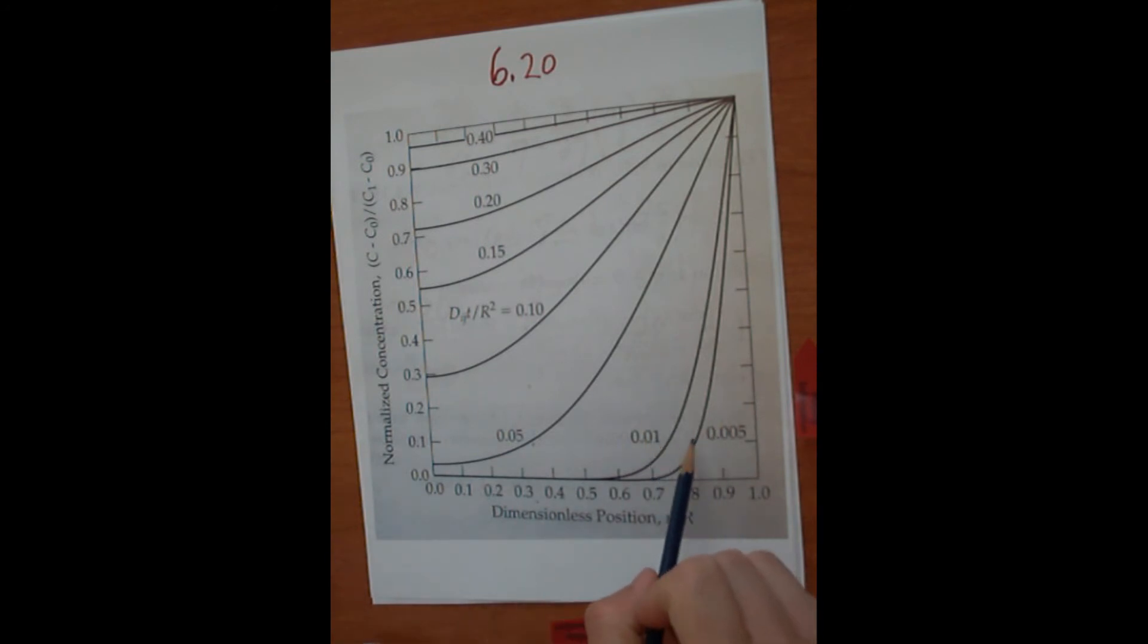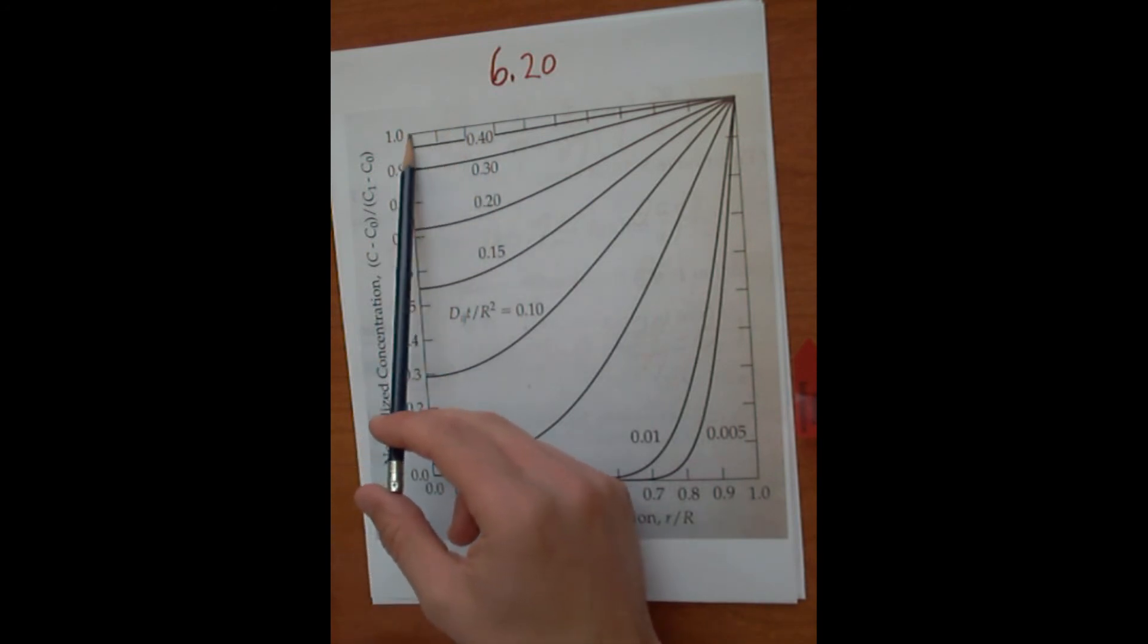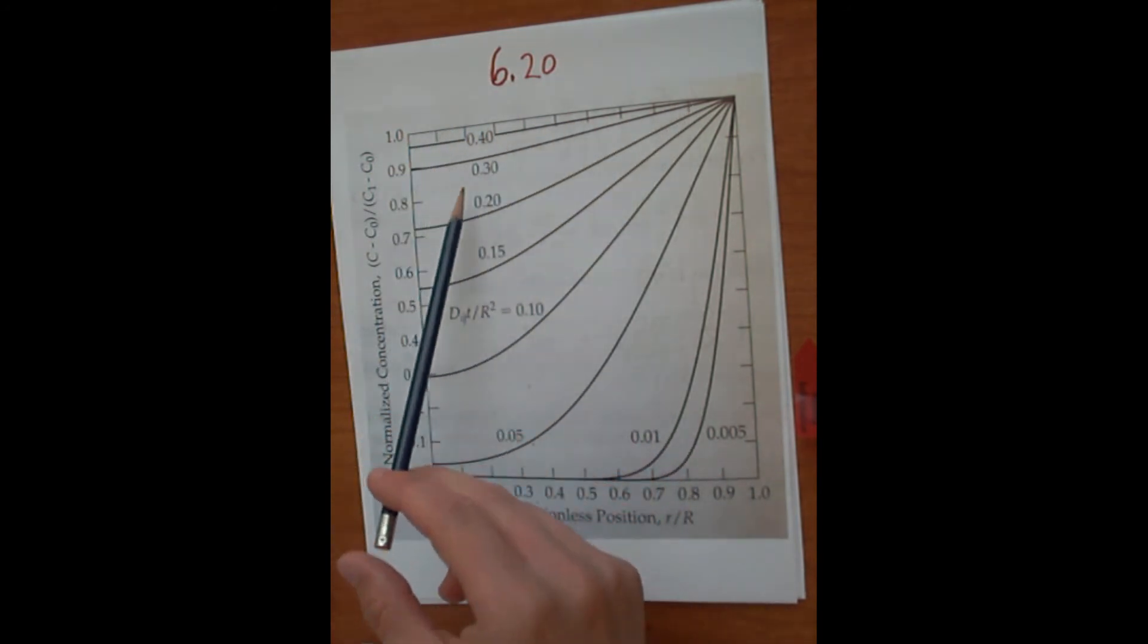But you can see that the non-dimensionalized time to reach steady state, which is going to be this horizontal line, is closer to tau equal to 0.5.